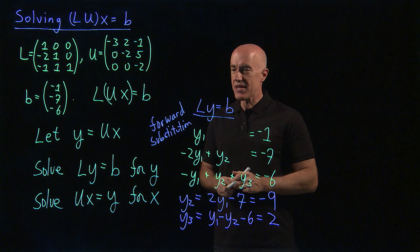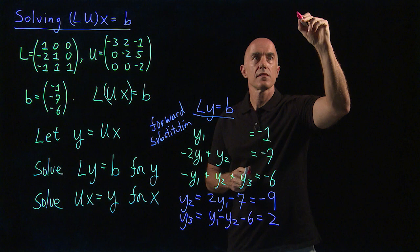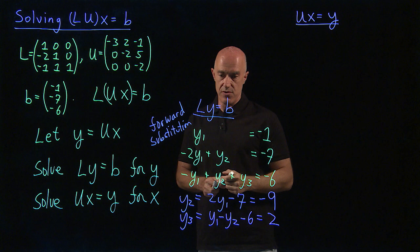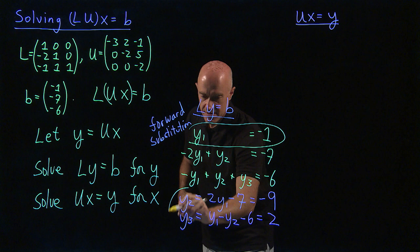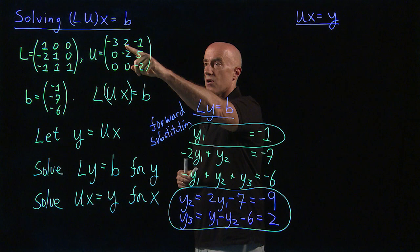So that was LY equals B. So the next step then is to solve UX equals Y for X. So what are the equations for UX equal to Y? So now we know Y. Y1, Y2 and Y3.